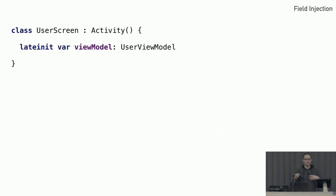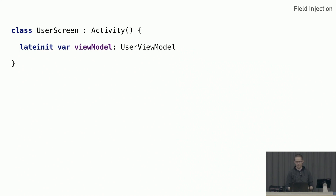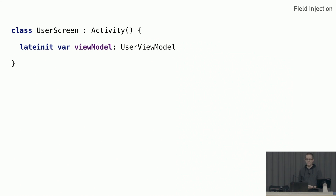In Android, we have some core classes where we don't have control over the constructors — services, fragments, and activities. This is also something you see in many libraries, where either you don't actually construct it and just provide an interface, or you have fragments where the class can be recreated at any given time, like when you rotate the phone, and the framework only uses the no-arg default constructor. So you can't pass anything using constructor injection.